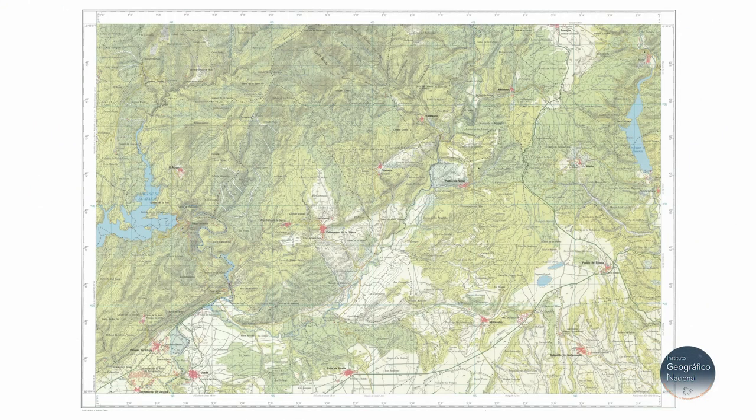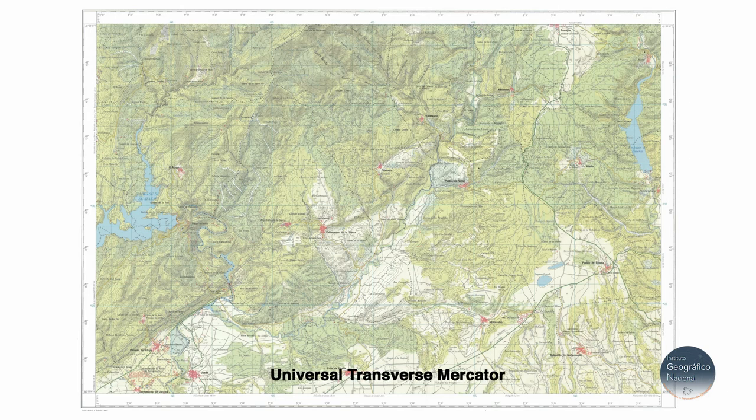This occurs, for example, in the Universal Transverse Mercator projection. In the official cartography of the National Geographic Institute, various cartographic projections are used, though mainly UTM and Lambert projections. I'm sure that now you have a better understanding of the shape of the Earth and how it's represented on maps.